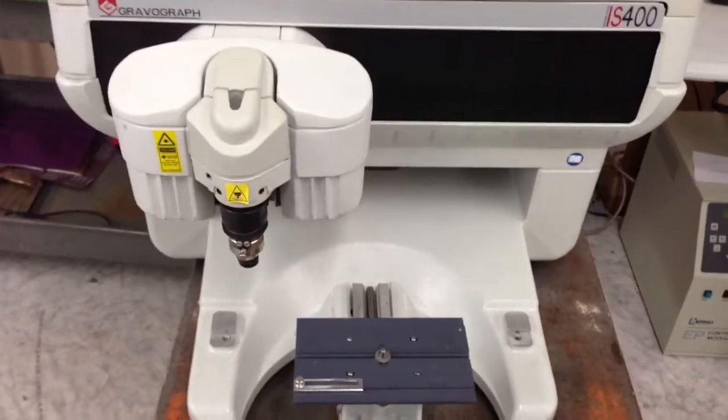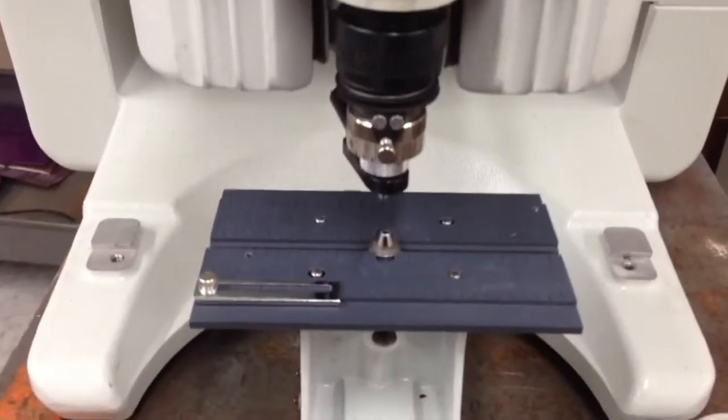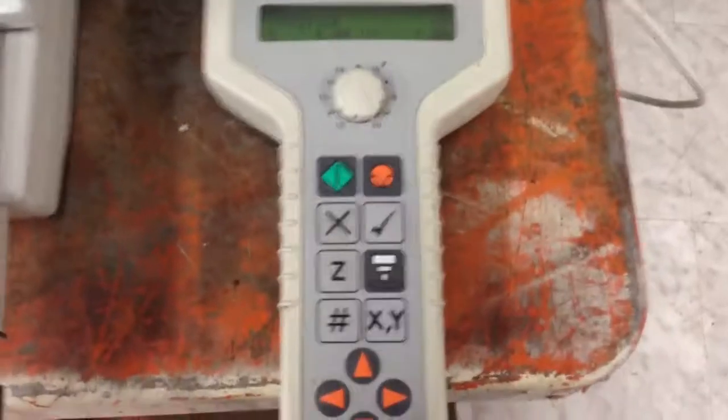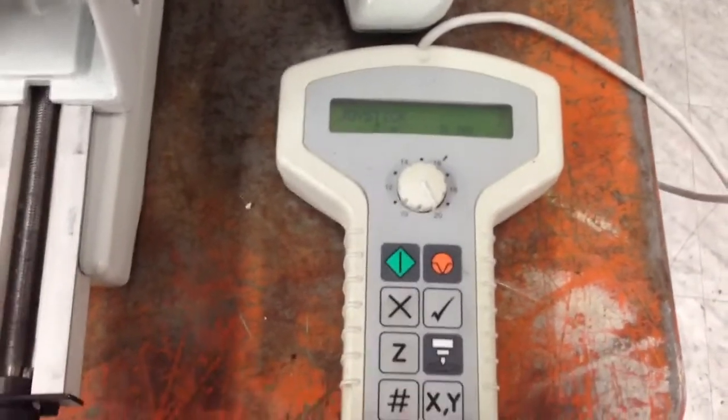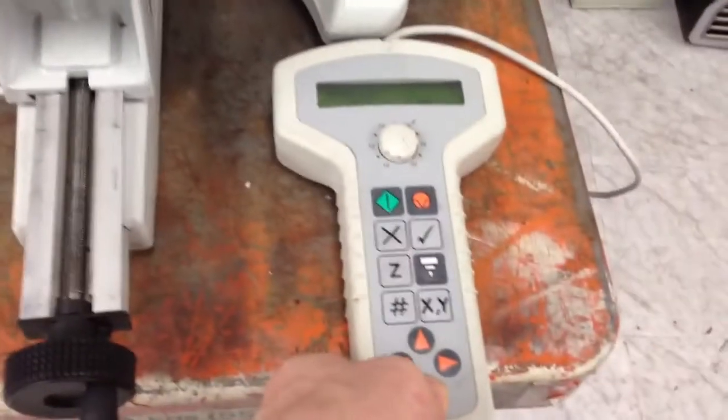And the machine will move to the center where it thinks the center is. Once we have that, it's not quite down far so we can't see where it is. So we're going to push our Z button. And then we're going to bring the head down with the down button.